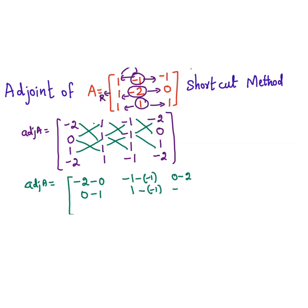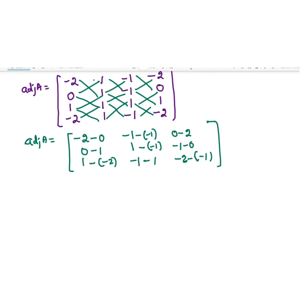Then 1 ones are 1, minus of 1 into minus 1 is minus 1. Then 1 ones are minus 1 into 1 is minus 1, then minus of 1 — 0s are 0 — then 1 ones are 1, minus of minus 2 into 1 is minus 2. Then 1 into minus 1 is minus 1, minus of 1 into 1 is 1, then 1 into minus 2 is minus 2, minus of minus 1 into 1 is minus 1. Now simply evaluate: minus 2 into 0 is minus 2, minus 1, minus into minus becomes plus 1. Then 0 into minus 2 is minus 2, 0 into minus 1 is minus 1, and minus into minus becomes plus 1.